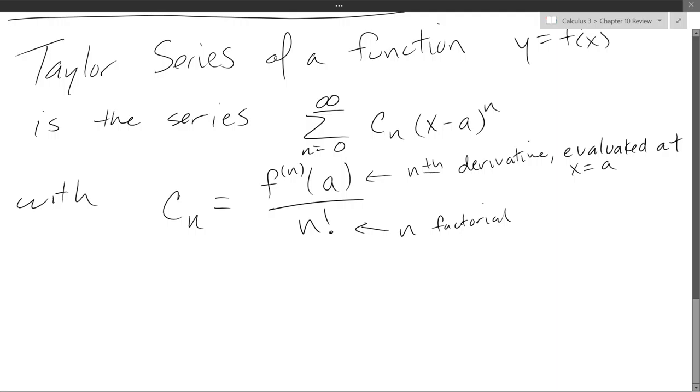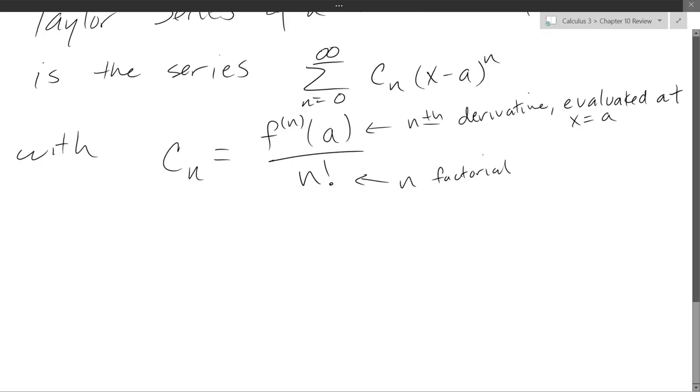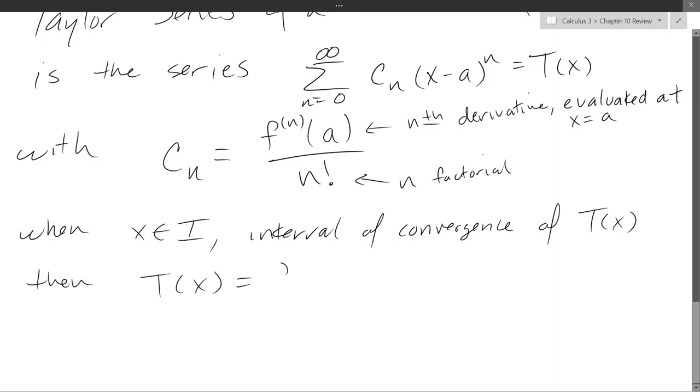So this is what a Taylor series is. It's a specific power series. And the infinite version is equal to the actual function itself. So if done correctly, and it converges, when x is in the interval of convergence, then T(x) equals f(x). So they will be equal if your x is in the interval of convergence.